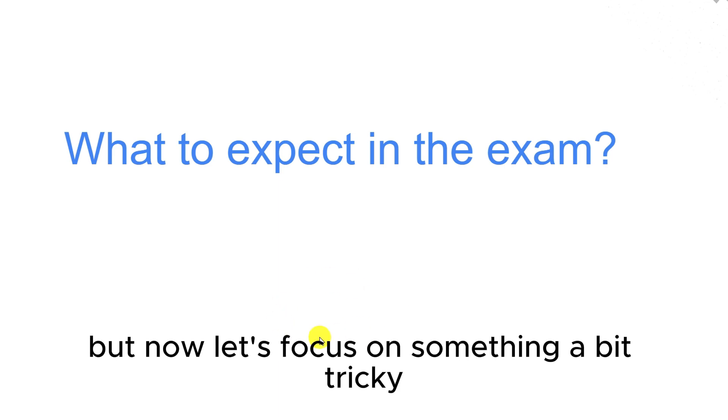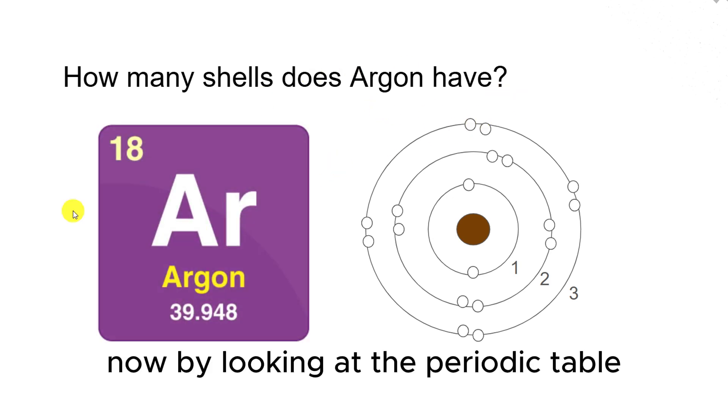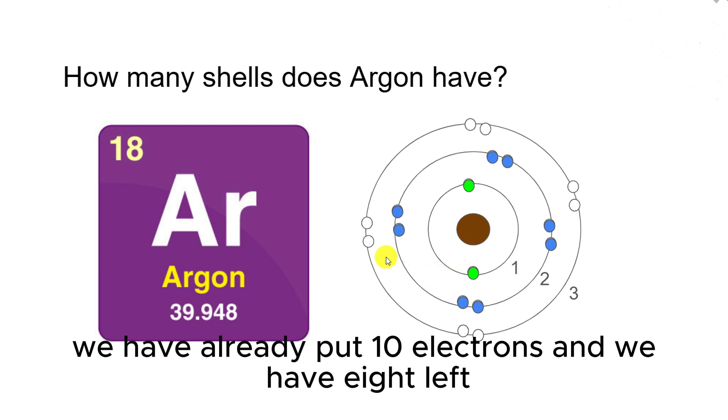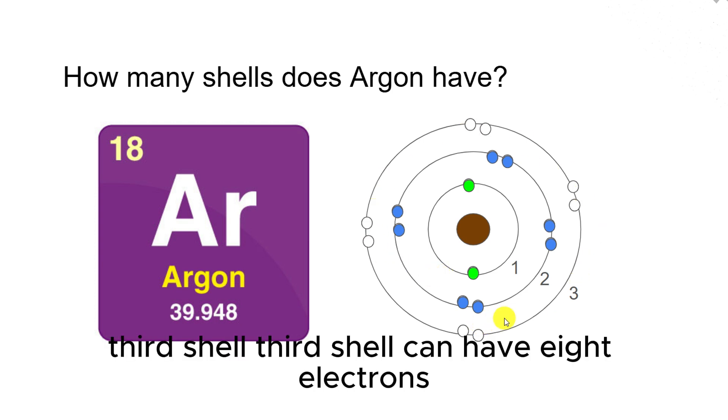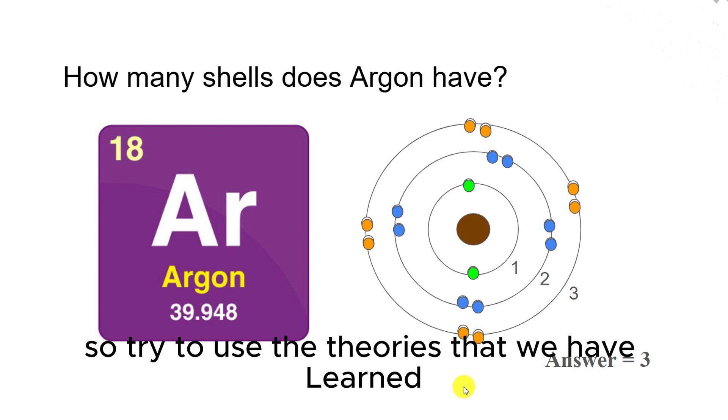But now let's focus on something a bit tricky. Here is the question: How many shells does argon have? By looking at the periodic table, we can see argon has atomic number 18. So it must have 18 protons and 18 electrons. Let's put them into the shells. First shell, two electrons. Second shell, eight electrons. We have already put ten electrons and we have eight left. Third shell, eight electrons. And we are done. How many shells did we fill? Three shells. So even though they try to be tricky, the answer is always very simple. Try to use the theories that we have learned and you will be good to go.